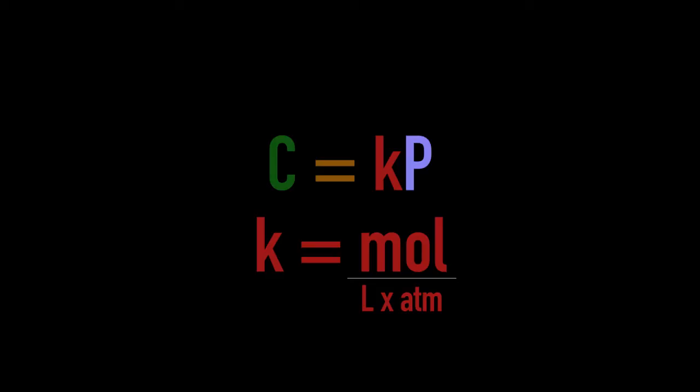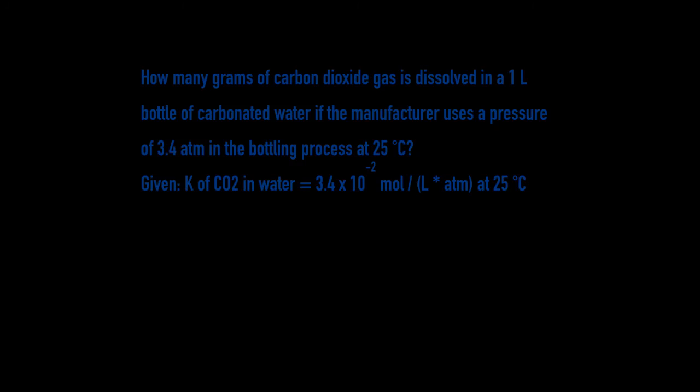So we have a problem, let's look at it. How many grams of carbon dioxide gas is dissolved in a 1 L bottle of carbonated water if the manufacturer uses a pressure of 3.4 atm in the bottling process at 25°C? So as we're given, we have that the Henry's Law constant of CO2 in water is 3.4 × 10^-2 mol/(L·atm) or molar over liters at 25°C.